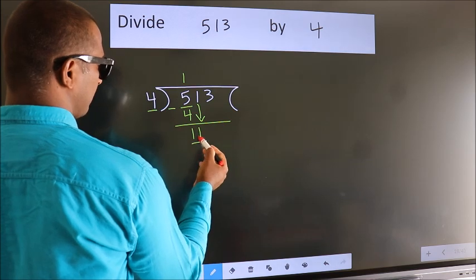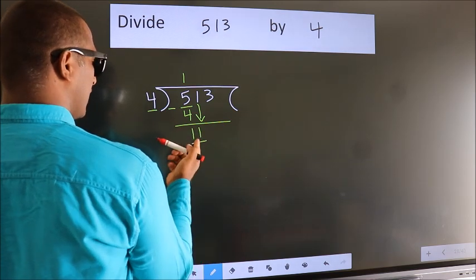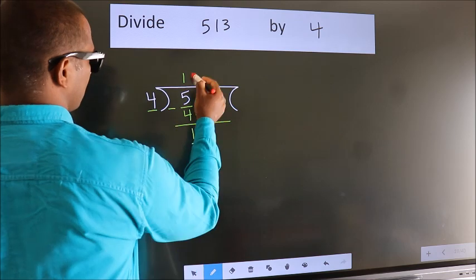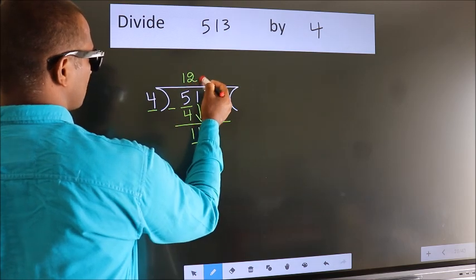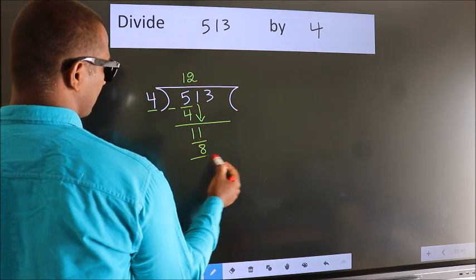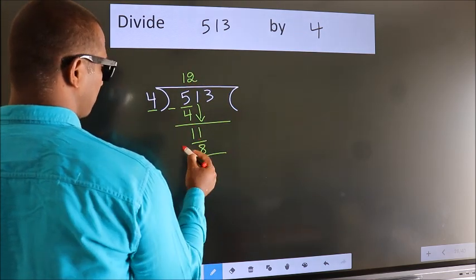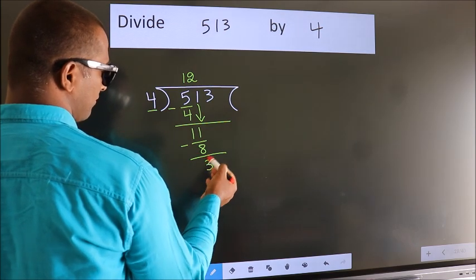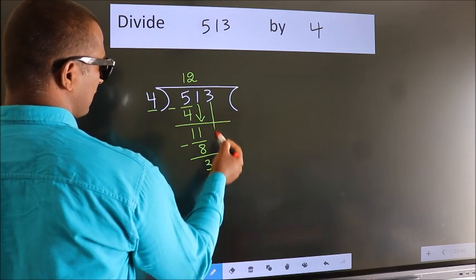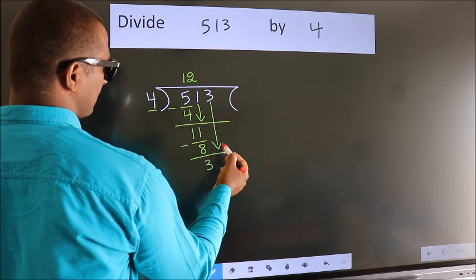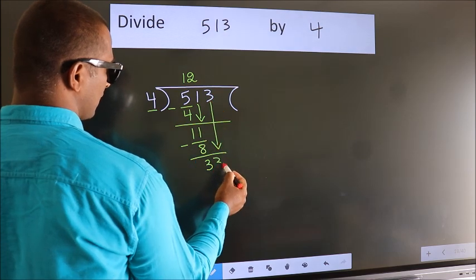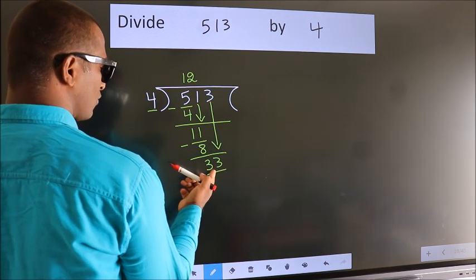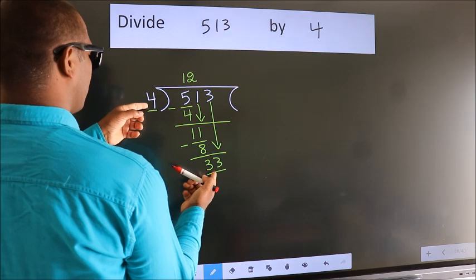So we have 11. A number close to 11 in the 4 times table is 4 twos — 8. Now we subtract, we get 3. After this, bring down the beside number, so 3 comes down.